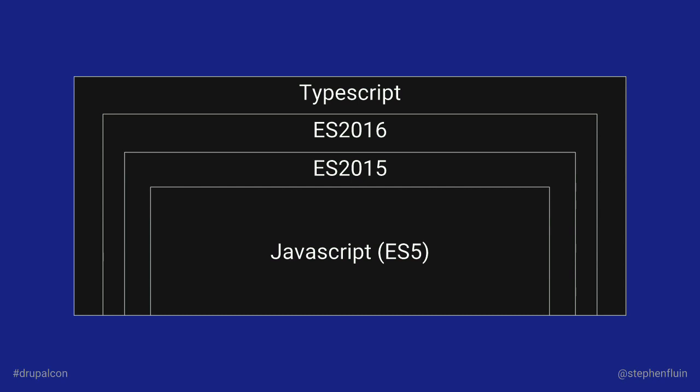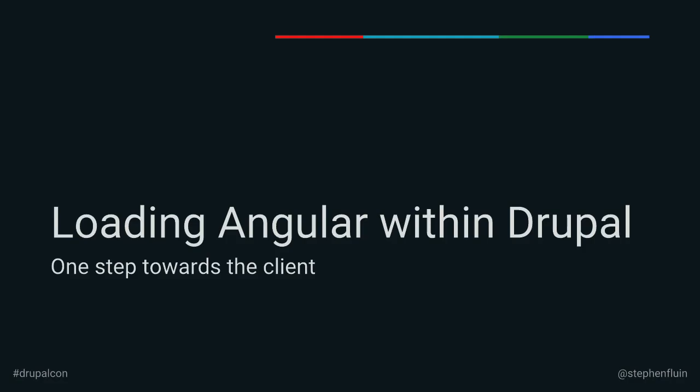Because of TypeScript, the Angular 2 Universal mentality and ability to run and prune things on the server is possible. A lot of that uses types — if we know what types of data your application is using, we can make sure we only load the right appropriate modules. So I'm going to jump into those three community contributions. The first one is going to be loading Angular within Drupal — one step towards the client.